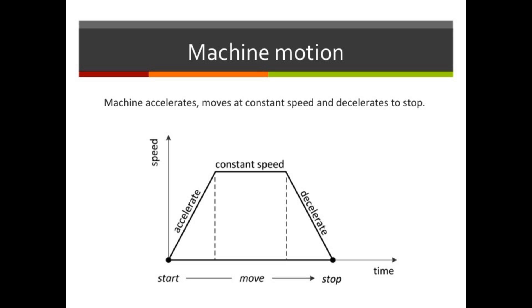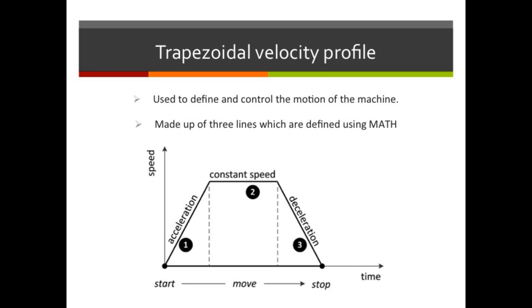When a machine moves, it first accelerates or speeds up until it reaches a top speed, then it travels at that speed for a little while. Finally, it decelerates or slows down until it stops. The trapezoidal velocity profile is defined using three lines: a line sloping up which is acceleration, the flat line which represents maximum velocity, and a line sloping down which is deceleration. Math is used to describe each of these lines as equations.